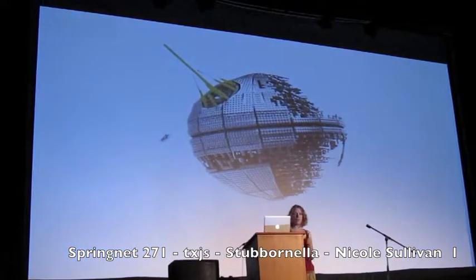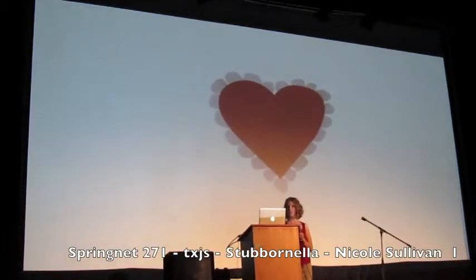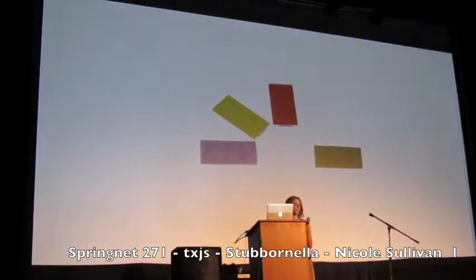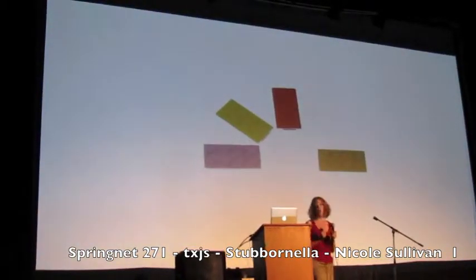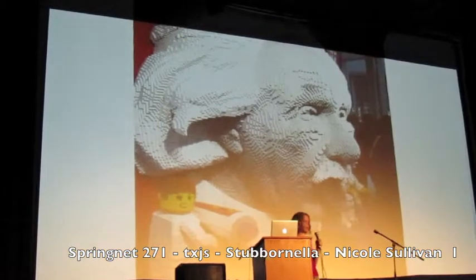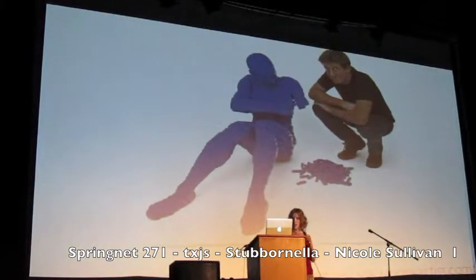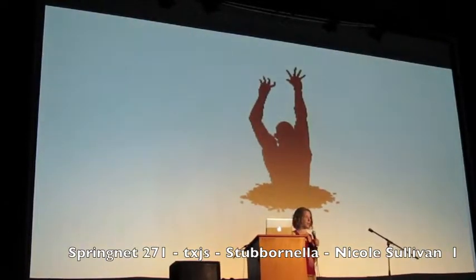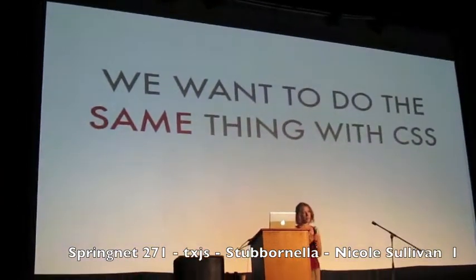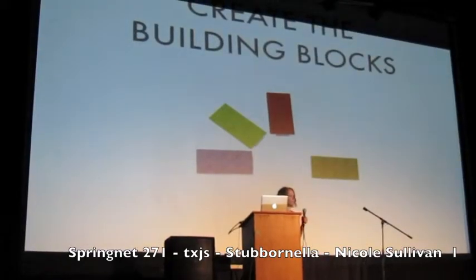When I first started at Facebook, I met an engineer who had a Lego Death Star on his desk, and I immediately fell into a deep geek crush. I thought about Legos and how they related to what we were doing. The cool thing about Legos is that with some really simple pieces — some basic building blocks — you can build all kinds of different things. We want to do the same sort of thing with CSS: create these building blocks, these basic chunks of HTML and CSS.